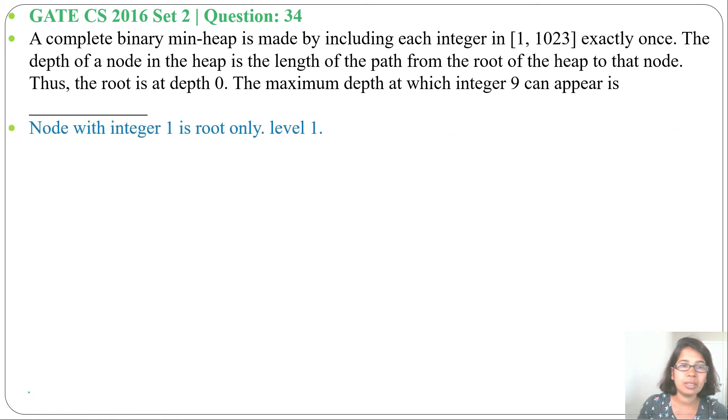Now let's solve this question. 1 will be root as this is the minimum. It will be at depth 0 or at level 1. Next, 2 will be 1's child, it will be at depth 1. Next, 3 will be 2's child.